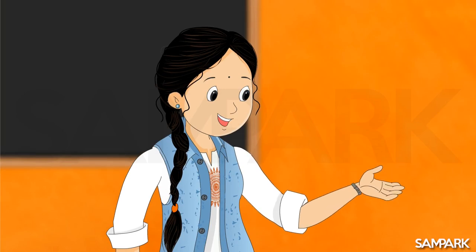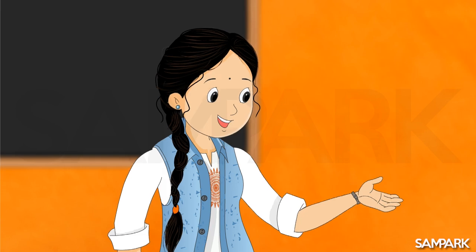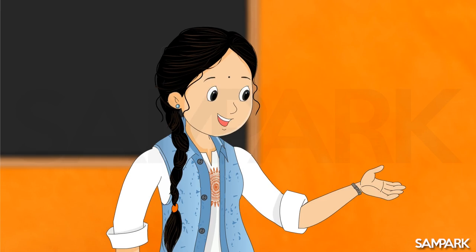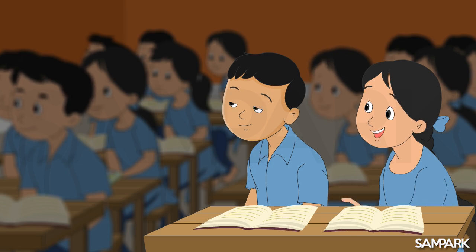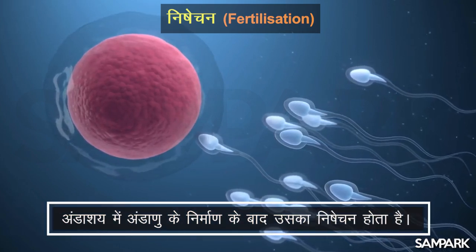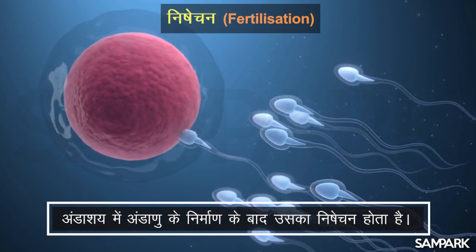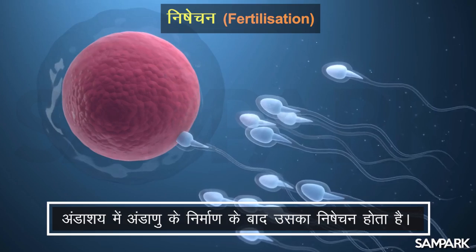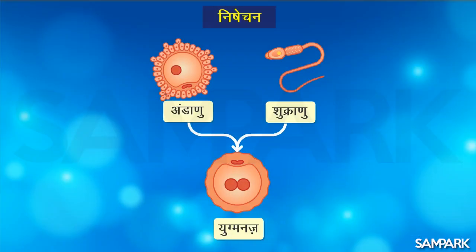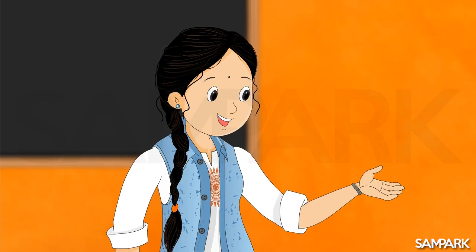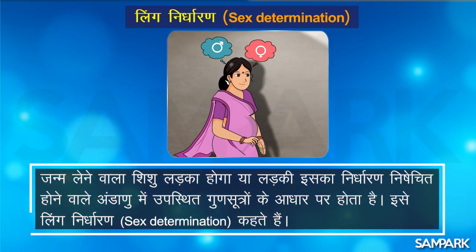अच्छा, तो ये जानना है तुम्हें! चलो आज मैं इसी के बारे में बताती हूँ। बच्चों, पहले ये बताओ कि अंडाशय में अंडाणु के निर्माण के बाद क्या होता है? दीदी, आपने पिछली कक्षा में बताया था कि अंडाशय में अंडाणु के निर्माण के बाद उसका निषेचन होता है, यानि शुक्राणु और अंडाणु का संगलयन होता है। हाँ दीदी, और निषेचन के बाद युग्मनज बनता है। अरे वाह! तुम्हें तो सब याद है। जन्म लेने वाला शिशु लड़का होगा या लड़की, इसका निर्धारण निषेचित होने वाले अंडाणु में उपस्थित गुण सूत्रों के आधार पर होता है। इसे लिंग निर्धारण, यानि सेक्स डिटर्मिनेशन, कहते हैं।